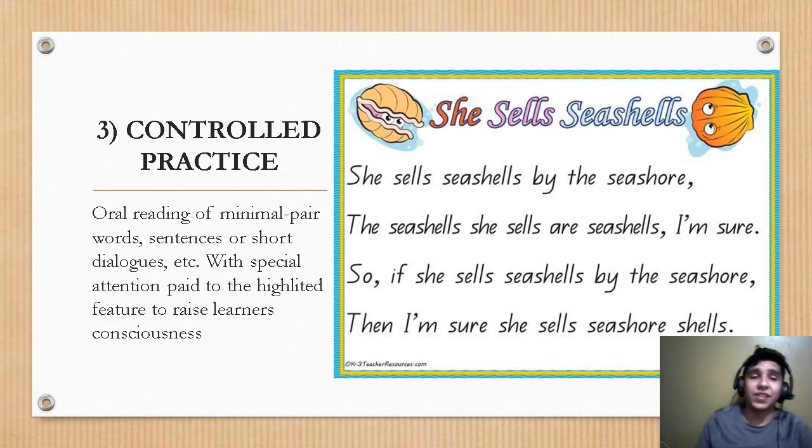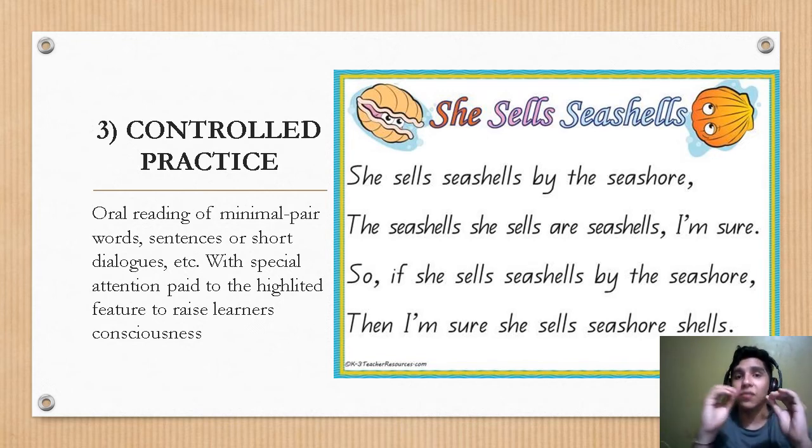The third station is the controlled practice. The controlled practice is very used in oral reading of minimal pair words, sentences, or short dialogues with special attention paid to the highlighted feature. In these activities, the learner's attention should be almost completely informed. Any kind of oral reading can work if the learner's attention is clearly focused on the target feature.